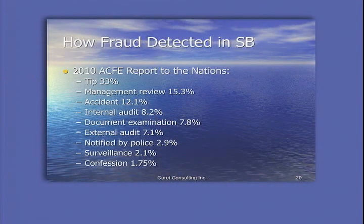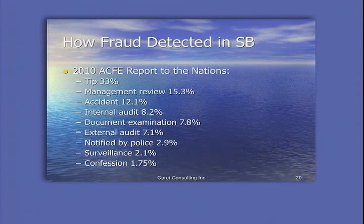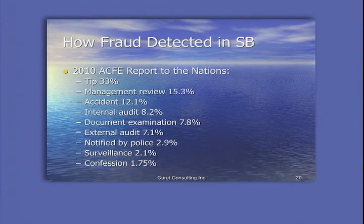And we mentioned the plain crook before. One interesting thing that came out of the Report to the Nations is TIPS — that's the number one way fraud is detected, at 33%. Accident is 12%. So almost 50% of fraud is detected by either accident or by tips. Even in bigger businesses, TIPS and accidents are near the top of the list. Audits are not that significant even in bigger businesses for finding fraud.